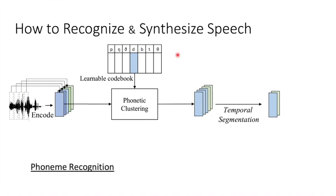The recognition can be done as this. We encode the audio into some hidden vectors, and phonetic clustering is performed, which gives us the code sequence of finite choices. After this, temporal segmentation is performed to obtain the recognition result. This is the recognition process.